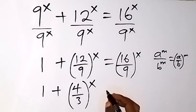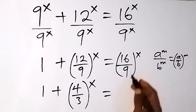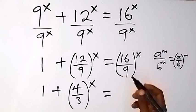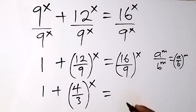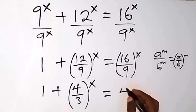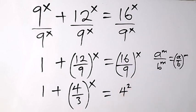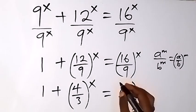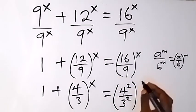Also from here, we can write 16 as a power of 2 and 9 as a power of 2: 4 raised to power 2 gives us 16, and 3 raised to power 2 gives us 9. Then all raised to power x.